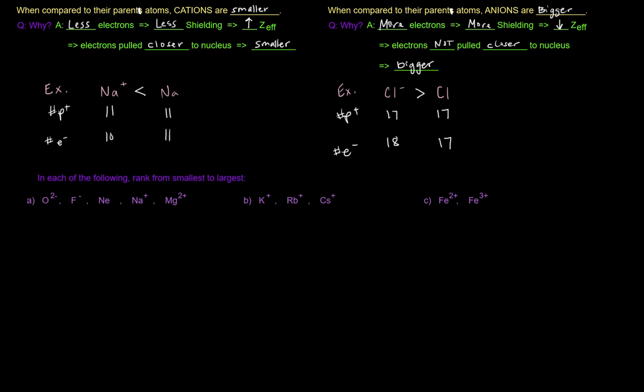So, let's try these three practice problems, ranking what's given from smallest to largest. And let's apply the same idea. So, if you look at O2 minus, F minus, NE, NA plus, MG, they're all different, they're all different in their nuclei, right? They have a different number of protons for each of these. The number of protons in each of these, oxygen has eight, right?